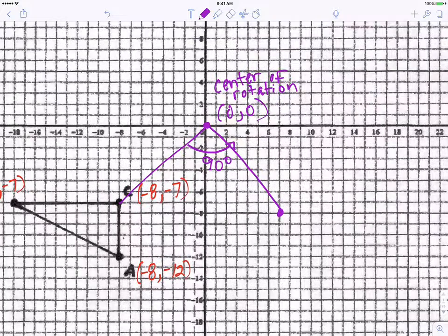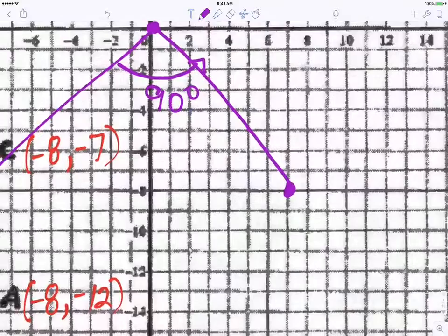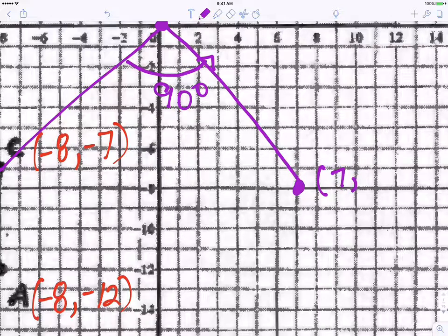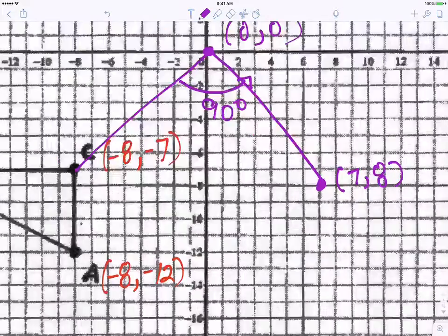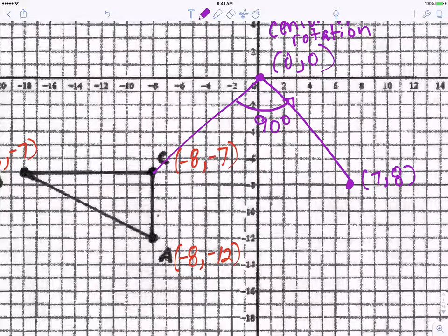There it is. So that is your 90 degree rotation. I didn't use a compass. And my new coordinate would be parentheses positive 7 comma 8. And that point is now C double prime.